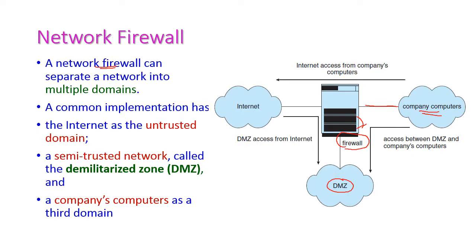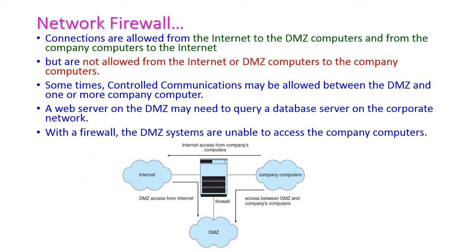The firewall can separate the network into multiple domains. The first one is the internet, which is an untrusted domain. The second is a semi-trusted network called the demilitarized zone, or DMZ. The third is the company's computers, which form a trusted or secured network. In a network firewall, connections are allowed from the internet to DMZ computers, and from the company's computers to the internet.